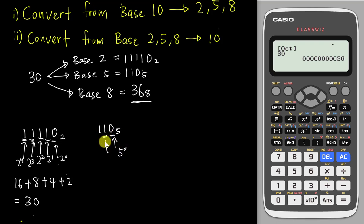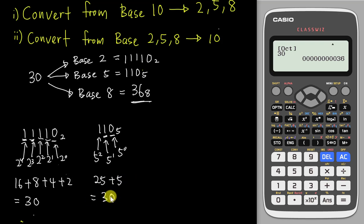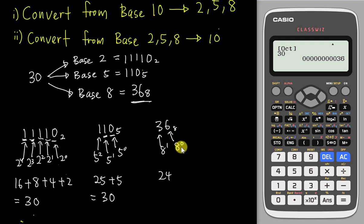Same idea for 110 base 5: the positions are 5⁰, 5¹, 5². So 1×5²=25, plus 1×5¹=5, plus 0×5⁰=0, giving 30. For 36 base 8: 3×8¹=24, plus 6×8⁰=6, giving 30. All three answers confirm back to 30, so all are correct.